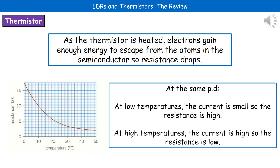If we keep the potential difference the same, at low temperatures we've only got a very small current flowing because only a very small number of electrons have been released from our semiconductor, meaning we have a very high resistance. At high temperatures, we've got a very high current because lots of electrons have been knocked out of the semiconductor, and therefore we have a low resistance.